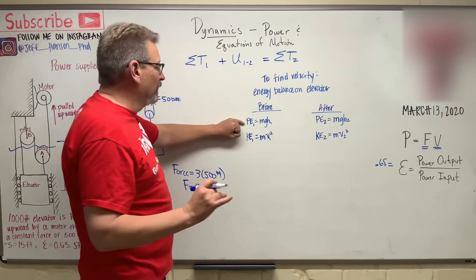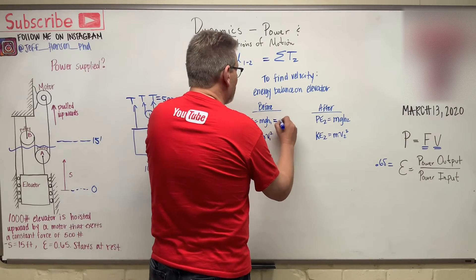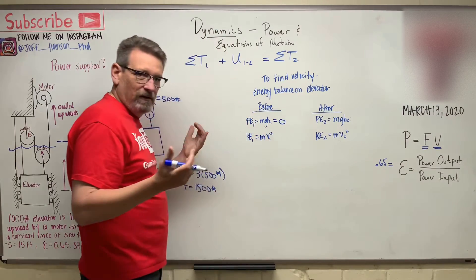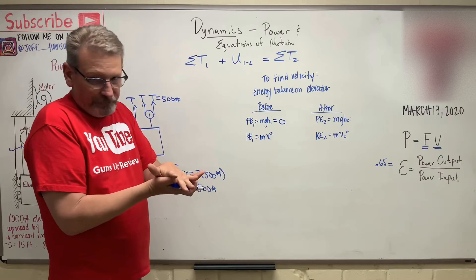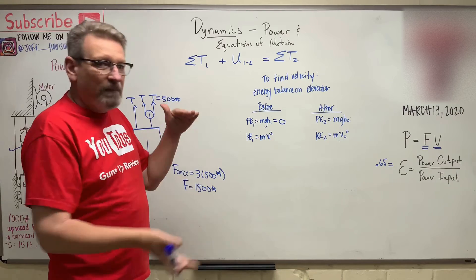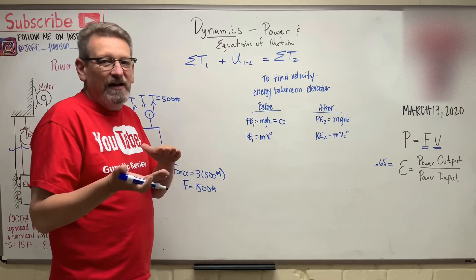So h1, the height is 0. So the potential energy where it's sitting, let's call it 0. We'll assume it was sitting on the ground or something. It may have had potential energy, but since that's our datum, we'll call that 0.